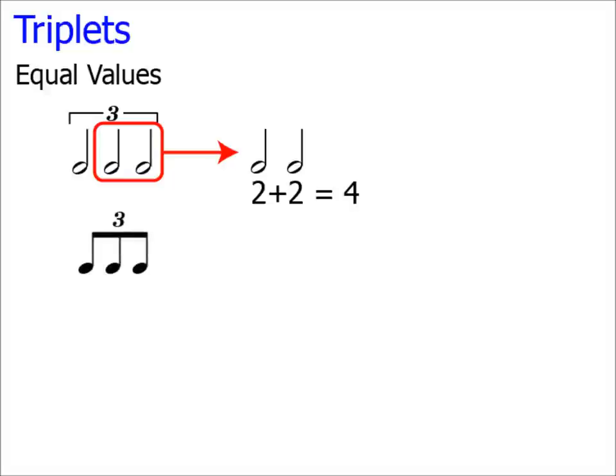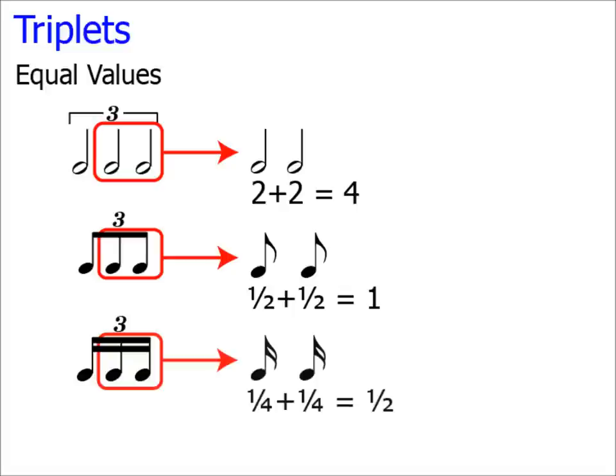Here are some triplet quavers. As the note values are equal, we take 2 of them, and we can see that they are to be played in the same time as 2 quavers, or the rhythmic value of 1. Here are some triplet semiquavers, and they are played in the same time as 2 semiquavers. So, remember that when the triplet notes are of equal values, as on the screen, 2 of the same note values would tell you the total value of the triplets.